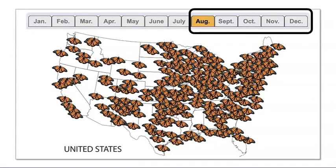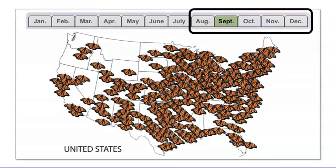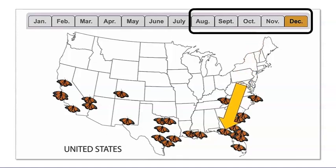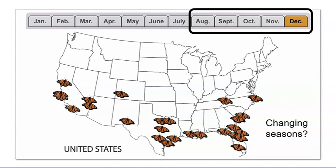Let's look at some more maps. What patterns do you notice for August through December? I noticed that as the weather gets colder, there are fewer monarch butterflies on the map. I also noticed that the butterflies move south to warmer places like Florida. Do you think the weather affects the movement of monarch butterflies? Maybe monarch butterfly movement is connected to the changing seasons. Let's check out another map to see if we can confirm our idea.